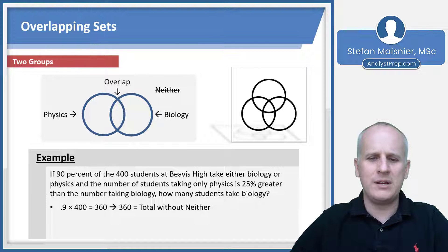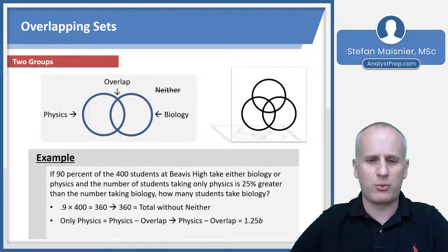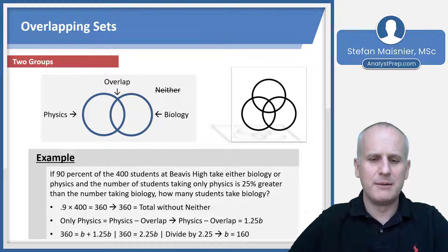Now we know that those taking only physics can be articulated as the group of physics minus the overlap. So our physics minus the overlap is going to be equal to 1.25 B with B representing those taking biology. So we've got a clear algebraic expression here. And we know that our total without neither is going to be equal to 360, which is going to be equal to the biology students plus physics minus overlap of 1.25 B.